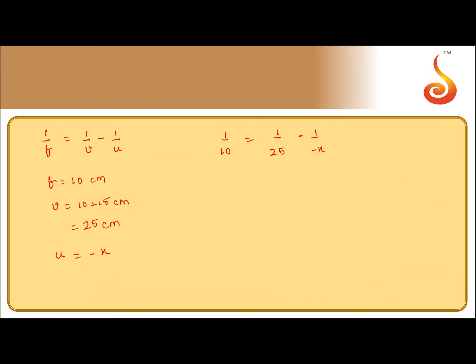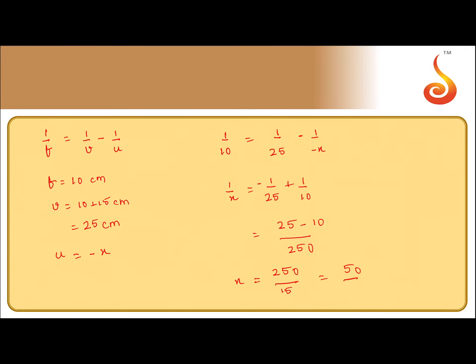So 1/x = 1/10 − 1/25, which gives (25 − 10)/250, so x = 250/15, which equals 50/3 centimeters. When we place the object at this distance from the lens, the image of the object falls on itself.